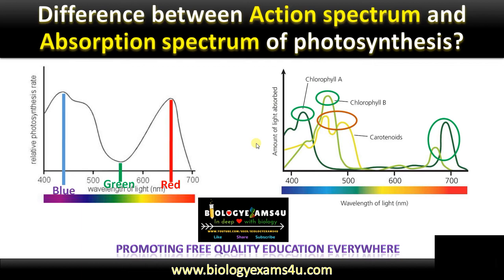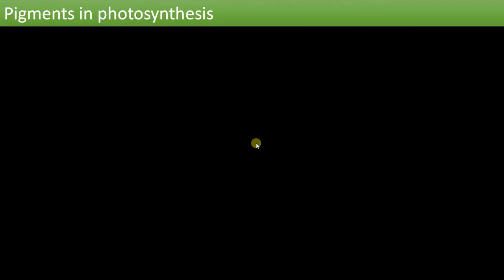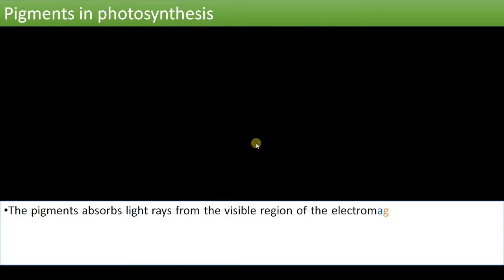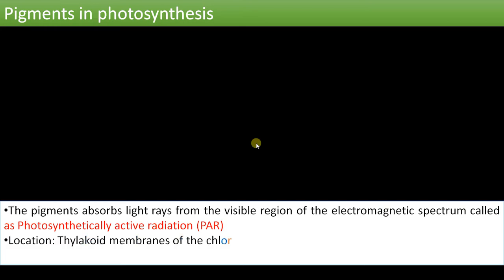If you are new to this channel, please subscribe and support. Let's begin. First, what are pigments? Pigments are chemicals that absorb light rays from the visible region of the electromagnetic spectrum.